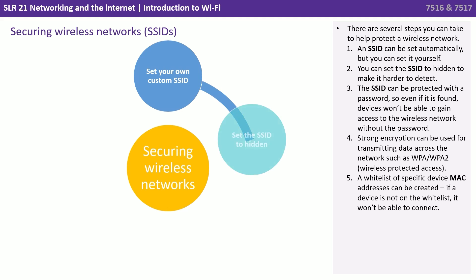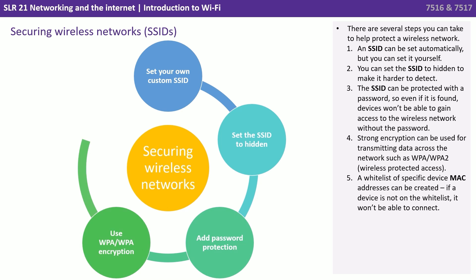There are several steps you can take to help protect a wireless network. An SSID can be set automatically, but you can also set it yourself. You can set the SSID to hidden to make it harder to detect. The SSID can be protected with a password, so even if it is found, devices won't be able to gain access without the password. Strong encryption can be used for transmitting data across the network, and you can even go as far as creating a whitelist.